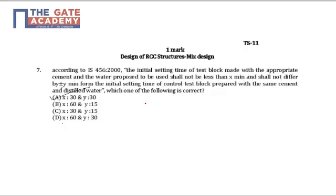Dear students, there is nothing much to discuss. It is a straightforward question which says that the initial setting time of a test block made with appropriate cement and water proposed to be used shall not be less than x minutes, and shall not differ by plus or minus y minutes from the control test block that is prepared with the same amount of cement and distilled water. Now it is asked which of the following is correct.